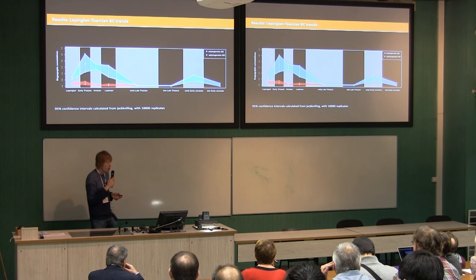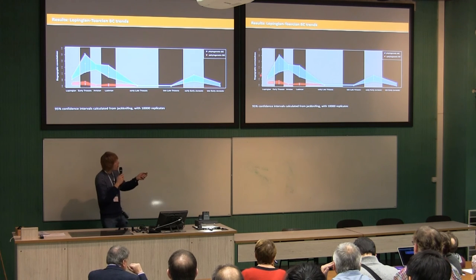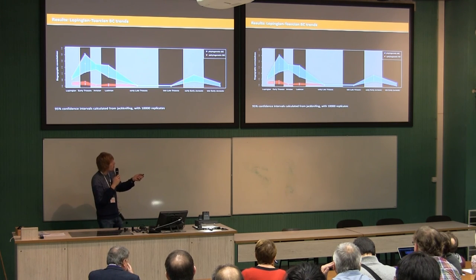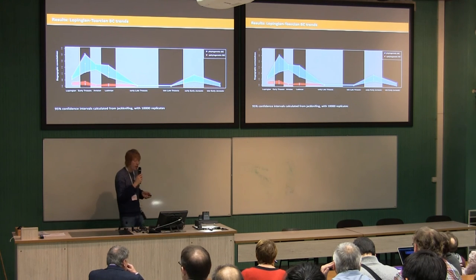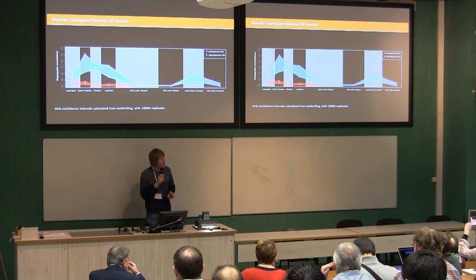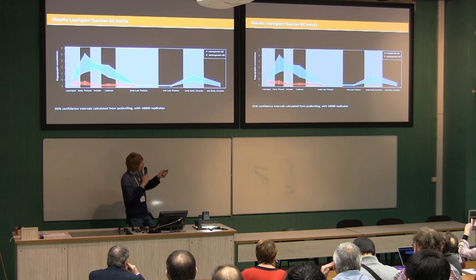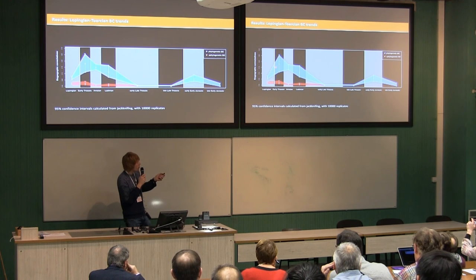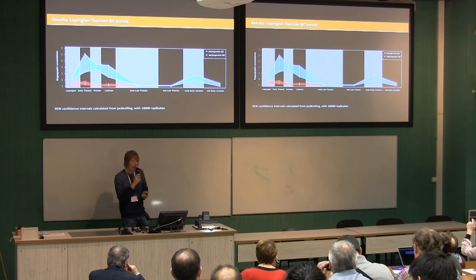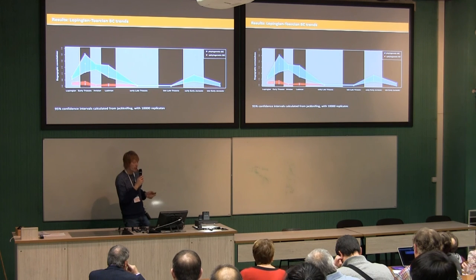There are two main results I want to draw attention to. First, we do see major increases in cosmopolitanism across both extinction events — a significant increase across the Permo-Triassic event with very high cosmopolitanism in the earliest Triassic, and the same across the Triassic-Jurassic event. We also see a general pattern of reduction in cosmopolitanism through time: starting with a very cosmopolitan fauna in the early Triassic that decays through the Triassic as endemism builds up, with very high levels of endemism in the late Triassic.